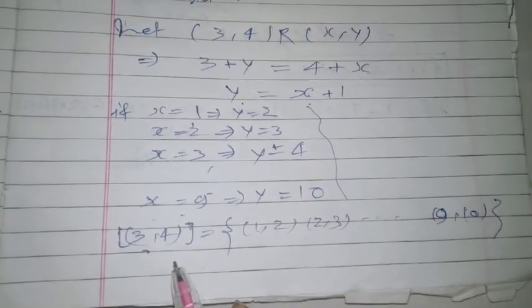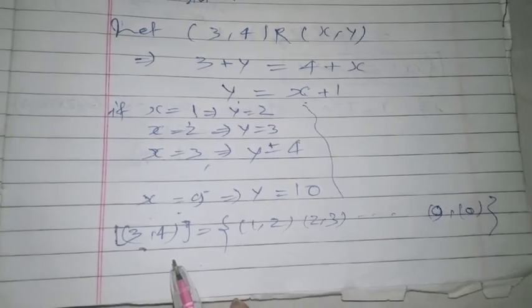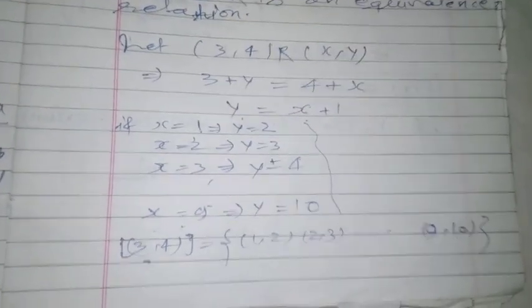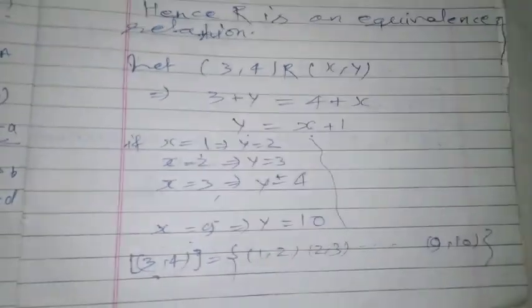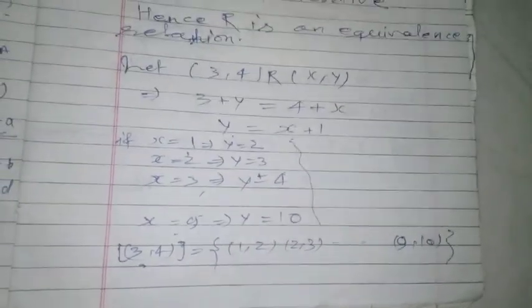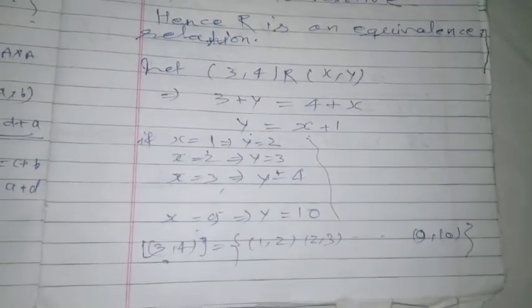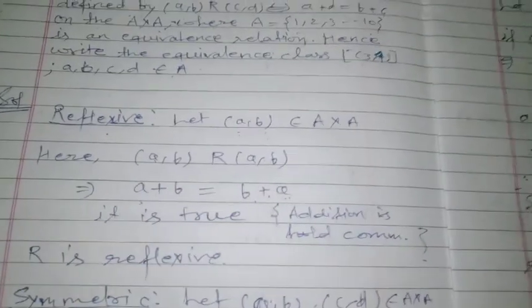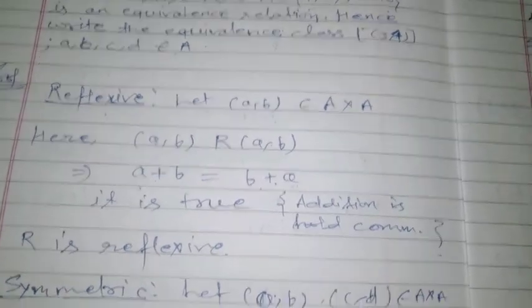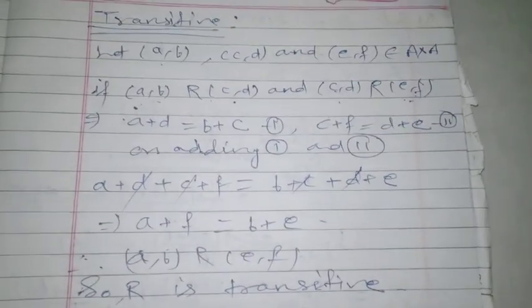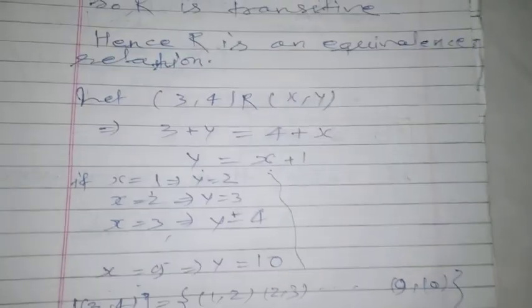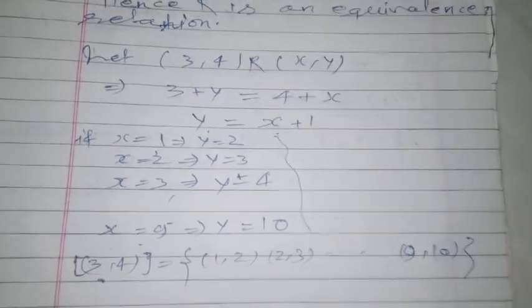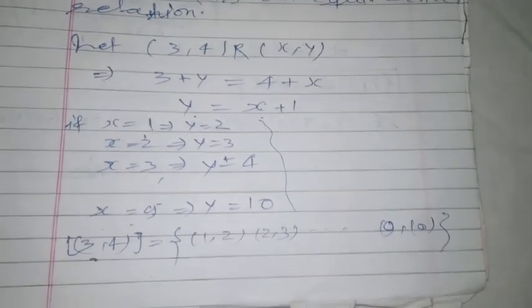This is the second type of question related to the relation topic and is very important for board examinations. There are only two types of questions in relations — the first type was discussed in the previous video and this video covers the second type. To summarize: we proved reflexive, symmetric, and transitive properties, and found the equivalence class of (3,4).